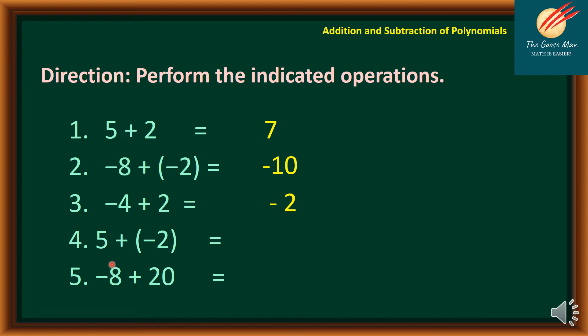Number 4: 5 plus negative 2 — we subtract and copy the sign of the greater absolute value, so we have 3. And finally, negative 8 plus 20 — we subtract again and copy the sign of the greater absolute value, which is positive, so we have positive 12.